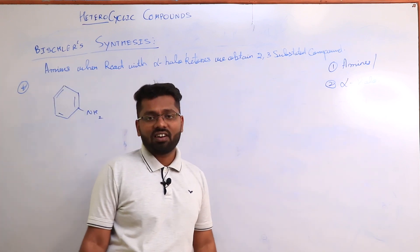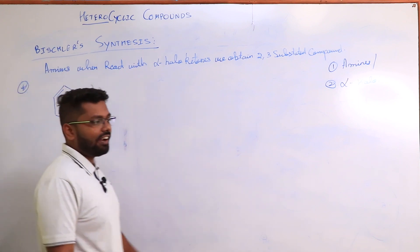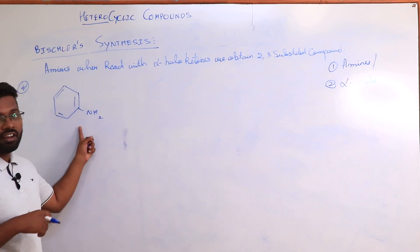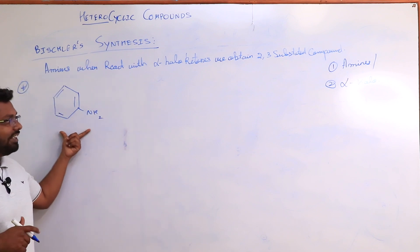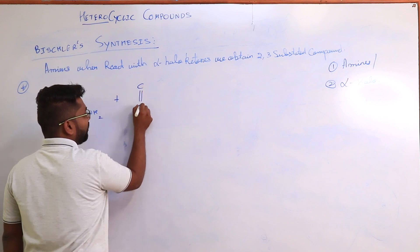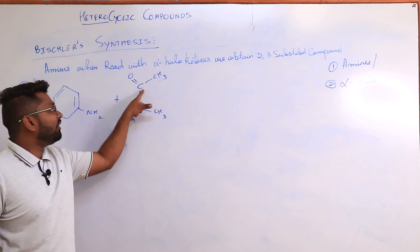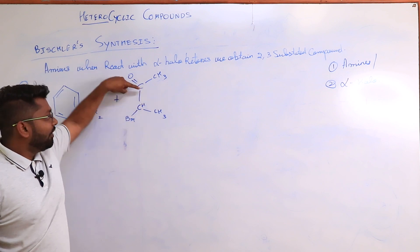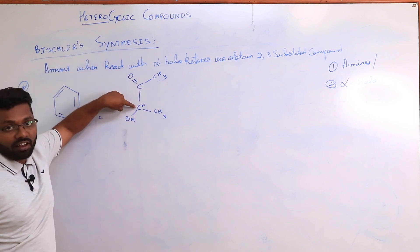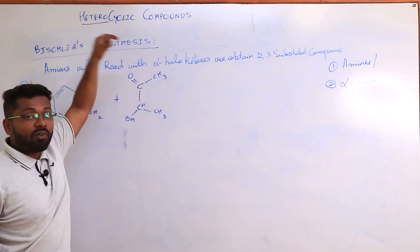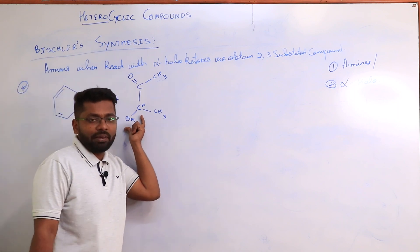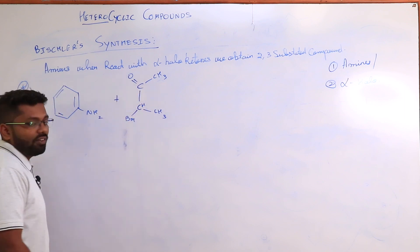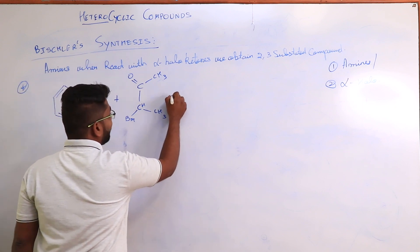The reactants are amines and alpha-halo ketones. The amine we are using is aniline — benzene with NH2 attached — which we have seen in the previous reaction as well. The ketone group is here with C double bond O. The adjacent carbon is the alpha carbon, and on the alpha carbon we have one halogen — I am considering Br in my case. So this is the alpha-halo ketone.